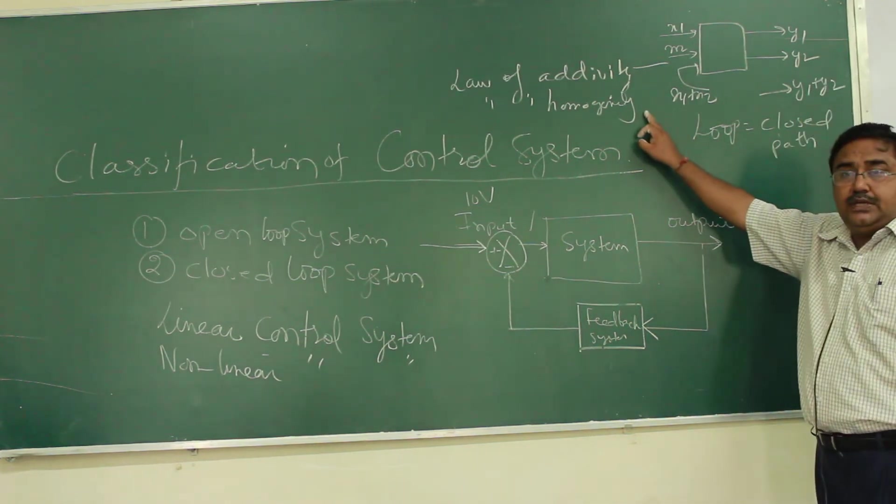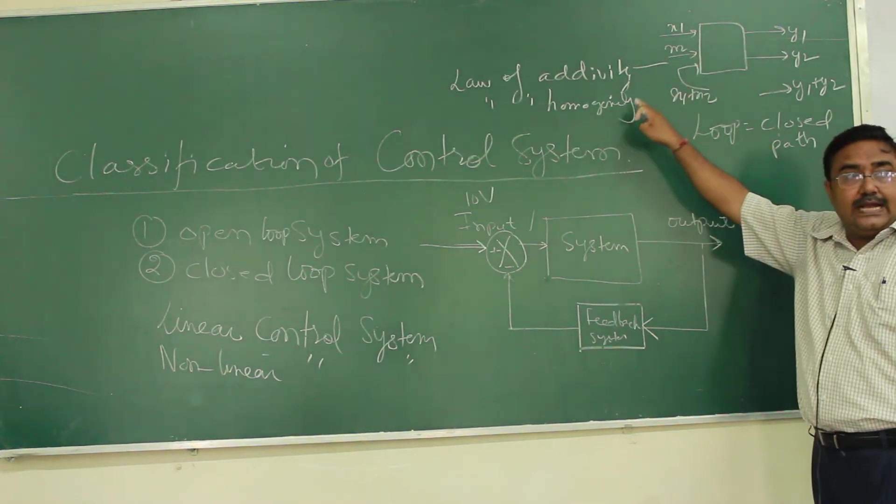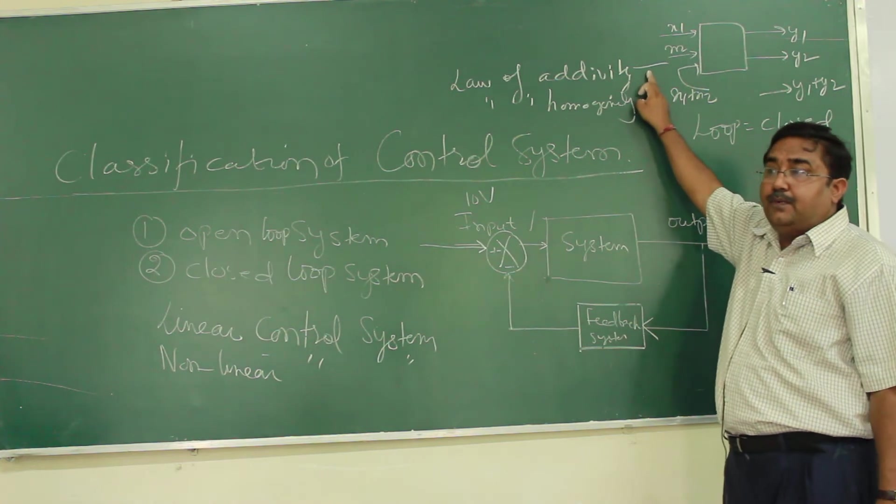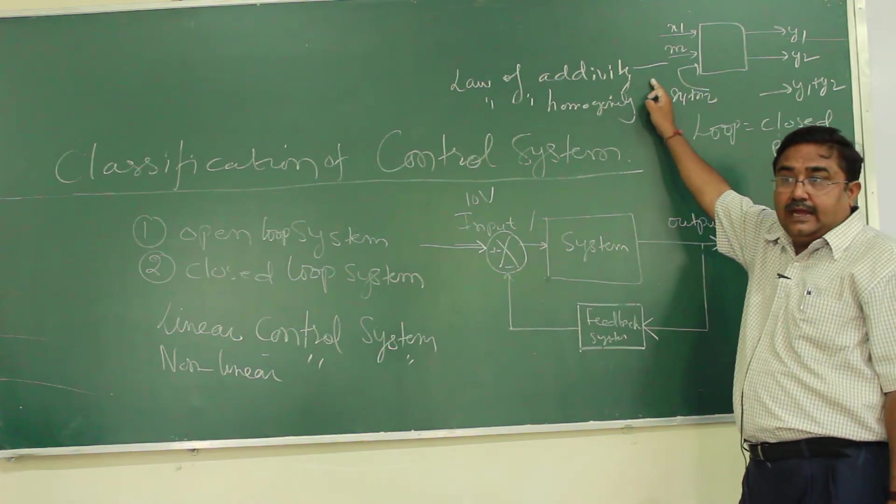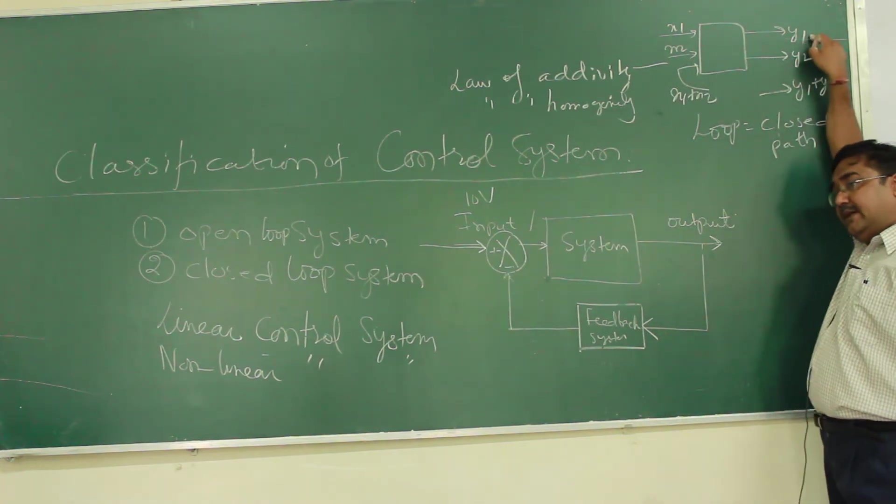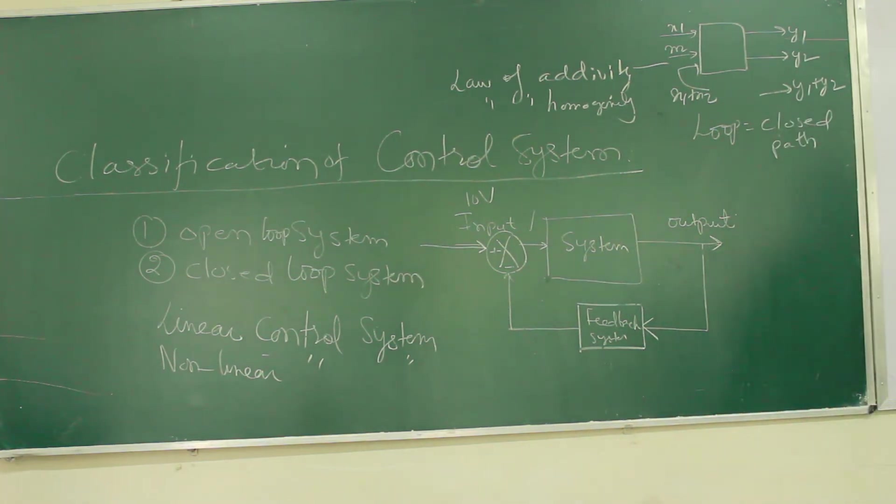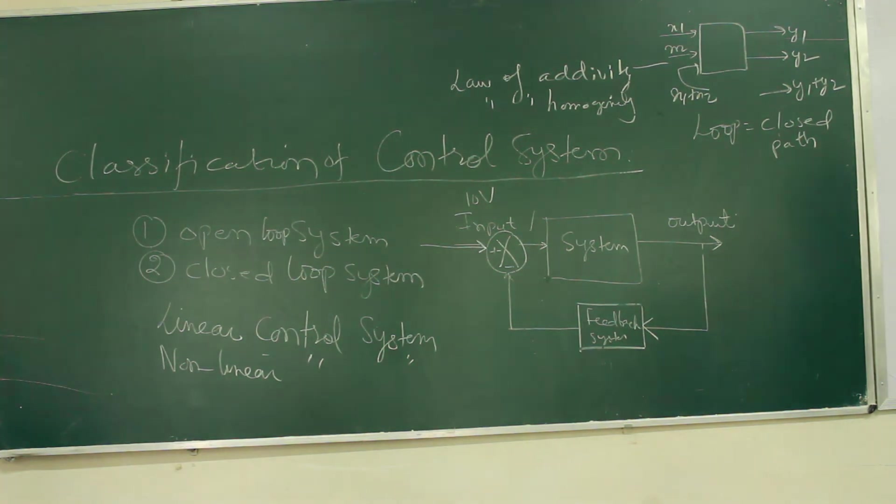Now, what is homogeneity? If I am applying an input x1 and getting output y1, now if I apply an input kx1 and I am getting output equal to ky1, then it obeys the principle of homogeneity. And if a system is obeying both two laws, we say the system is linear, otherwise the system is non-linear.